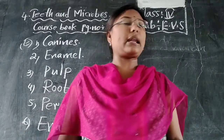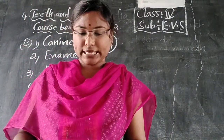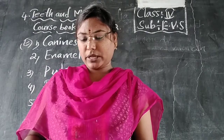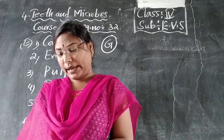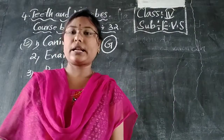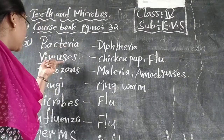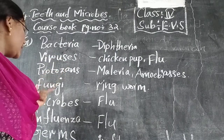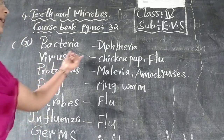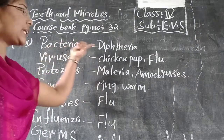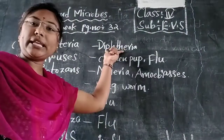Next we are explaining about G-Bit. Question: name at least one disease caused by given micro-organisms. Micro-organisms which cause disease include bacteria, virus, protozoa, fungi. The bacteria causes Diphtheria — D-I-P-H-T-H-E-R-I-A.